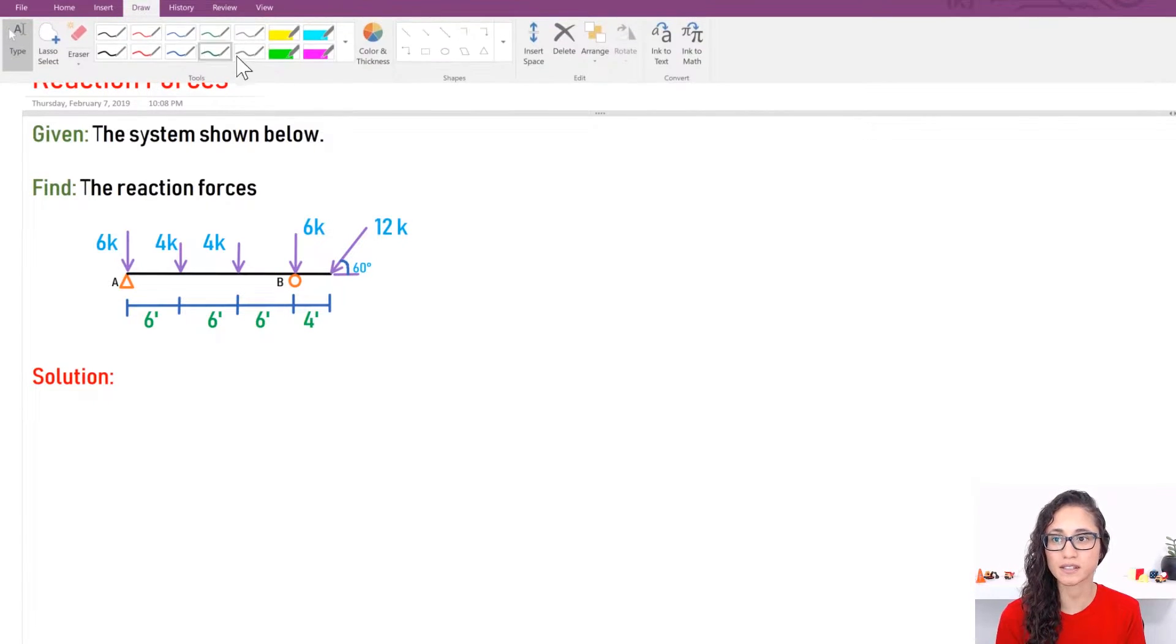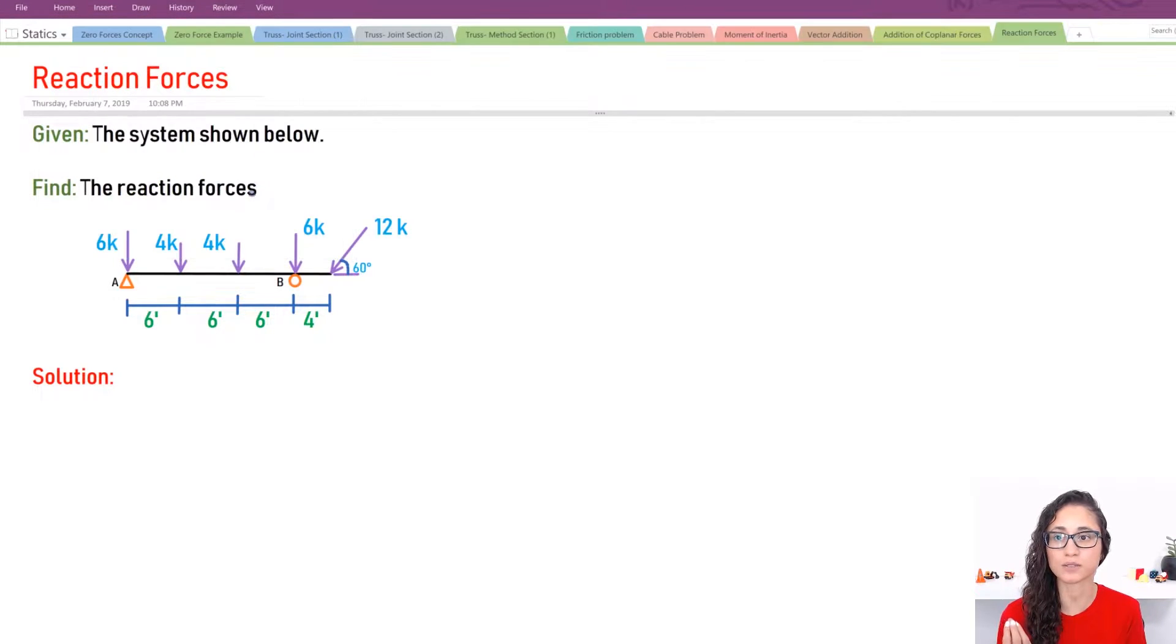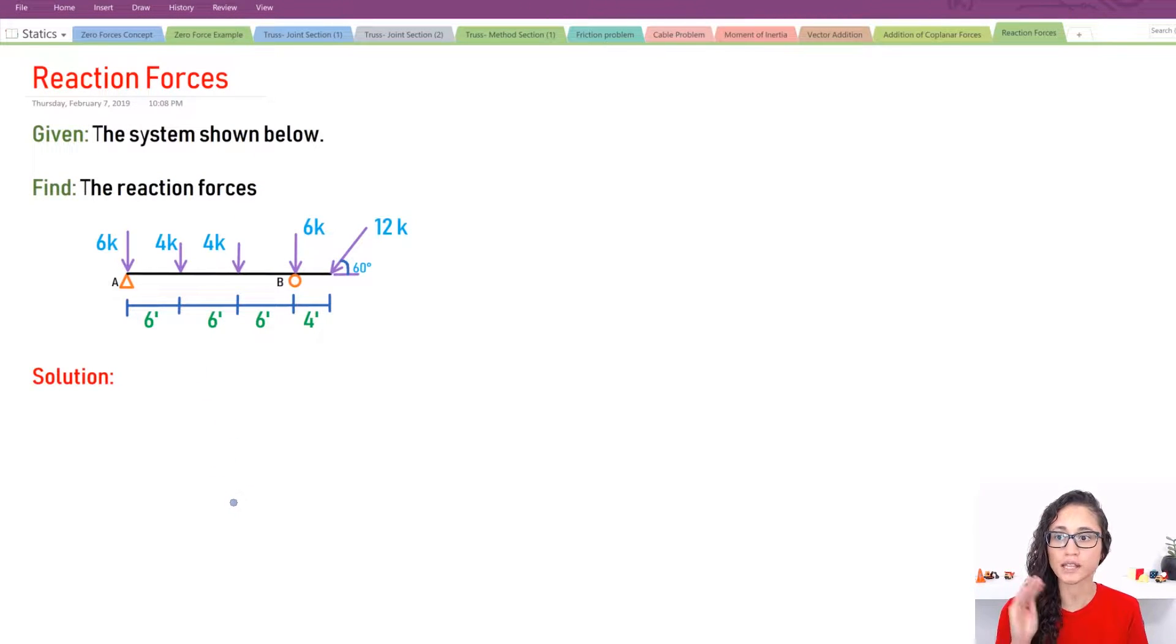Okay guys, so we were given this system and we need to calculate the reaction forces. So let's first determine our reactions. So at A we have a pin, so it has x and y direction, right? So I'm going to have Ay here and then Ax this way. And then for B we have a roller, so it's just going to have the y component which is By.